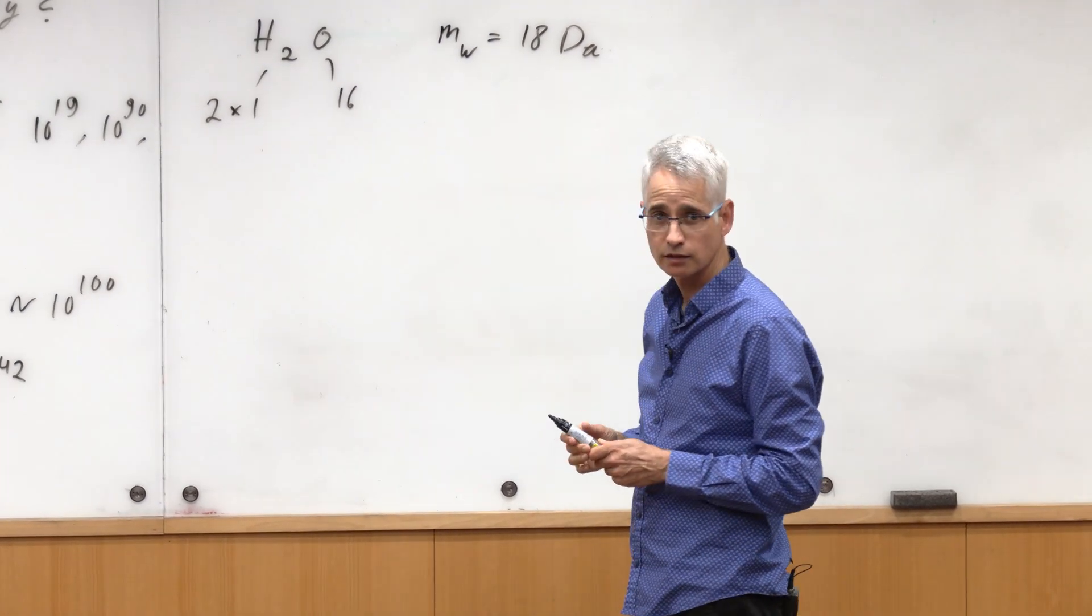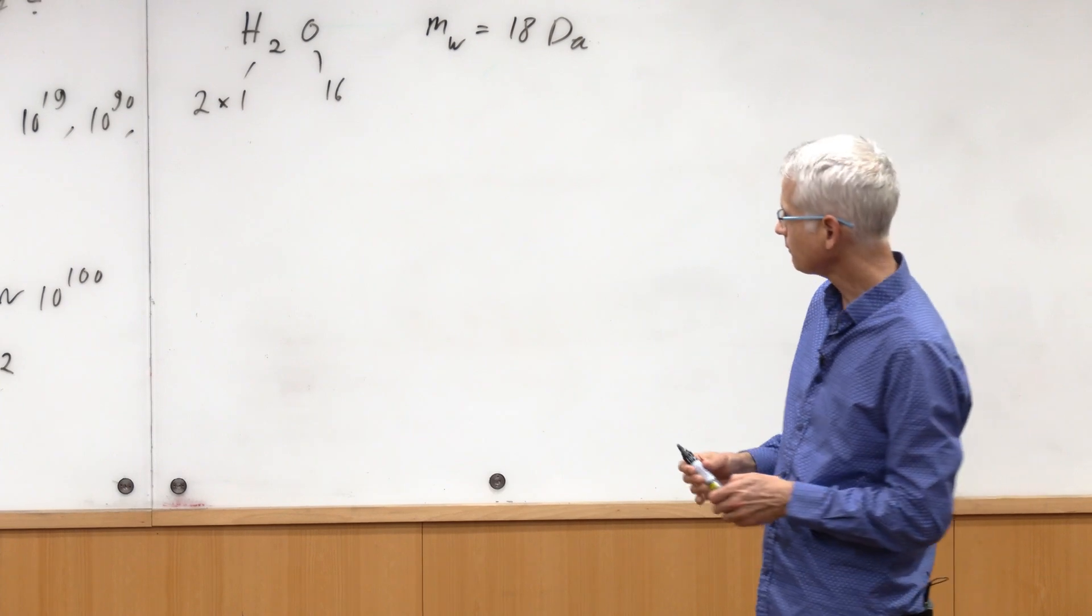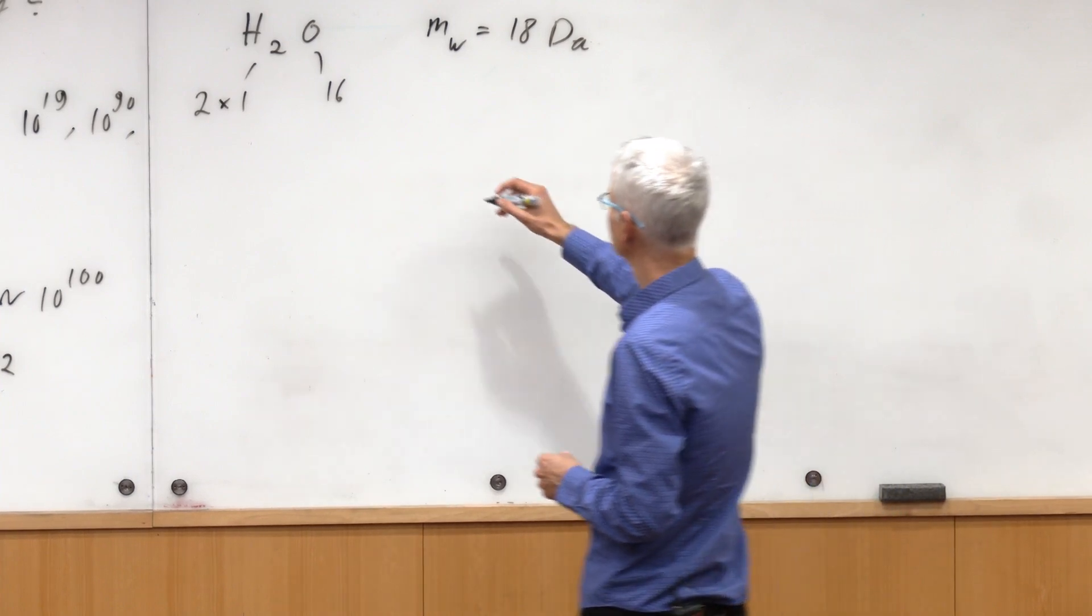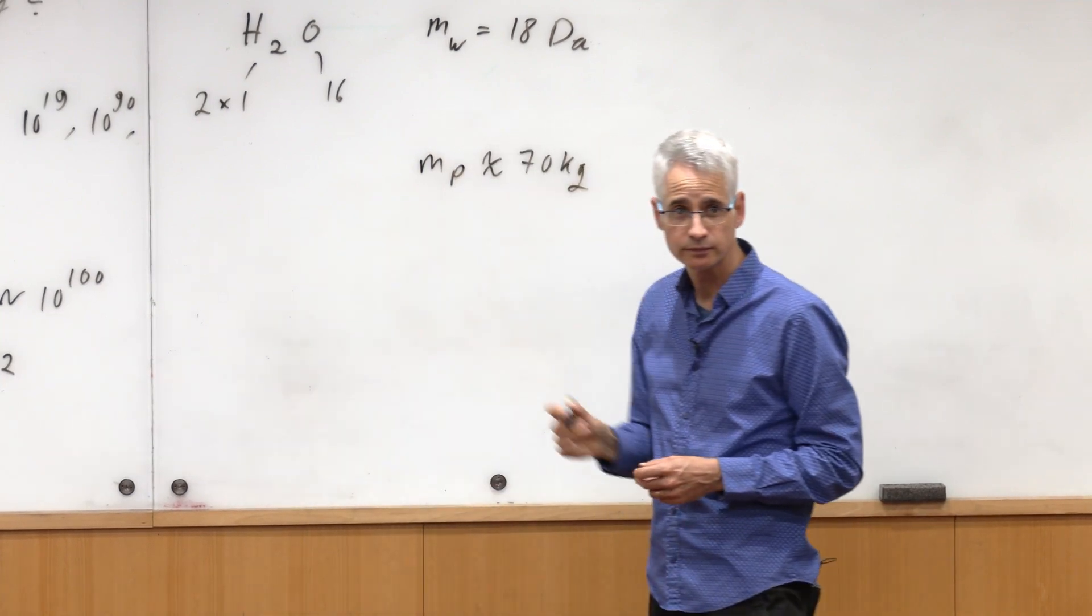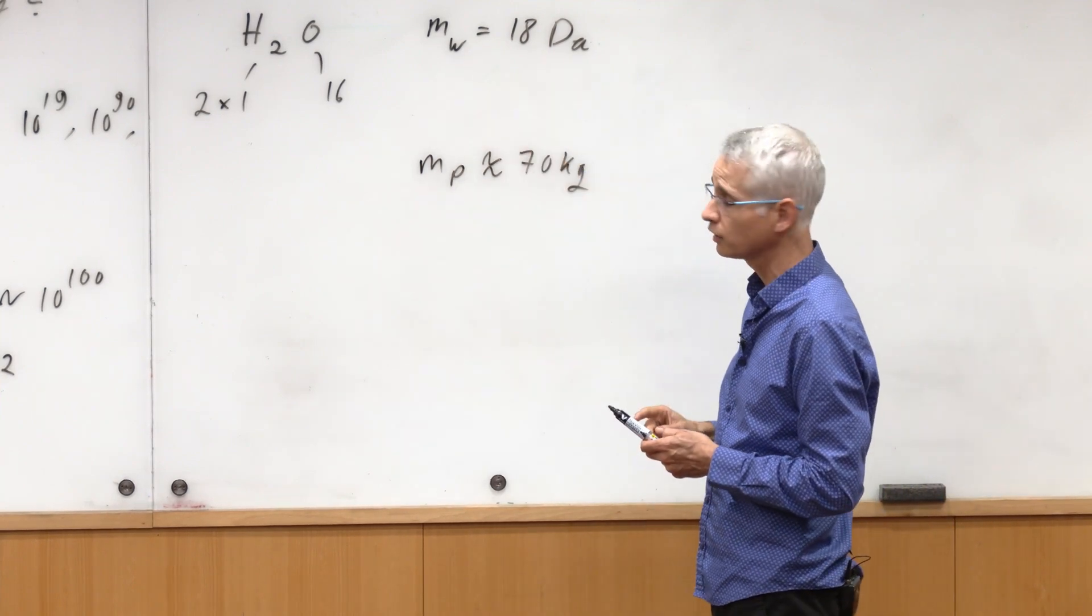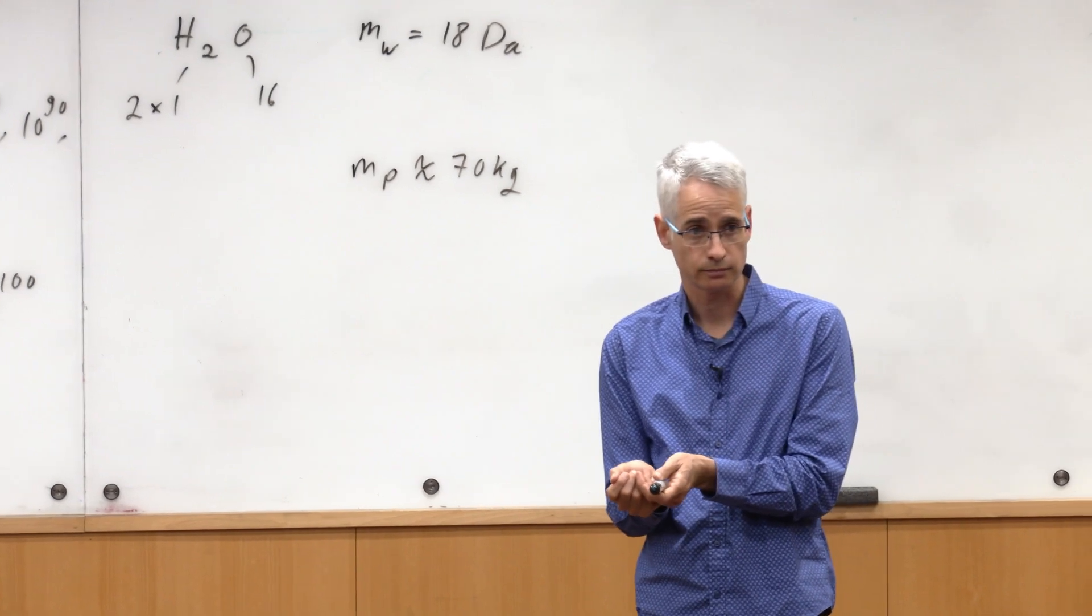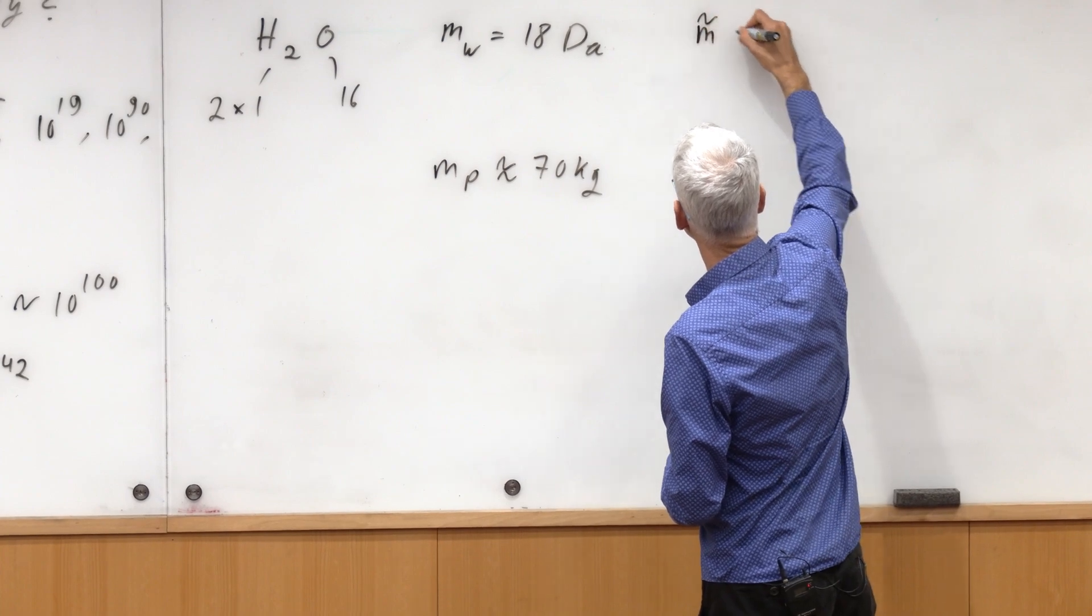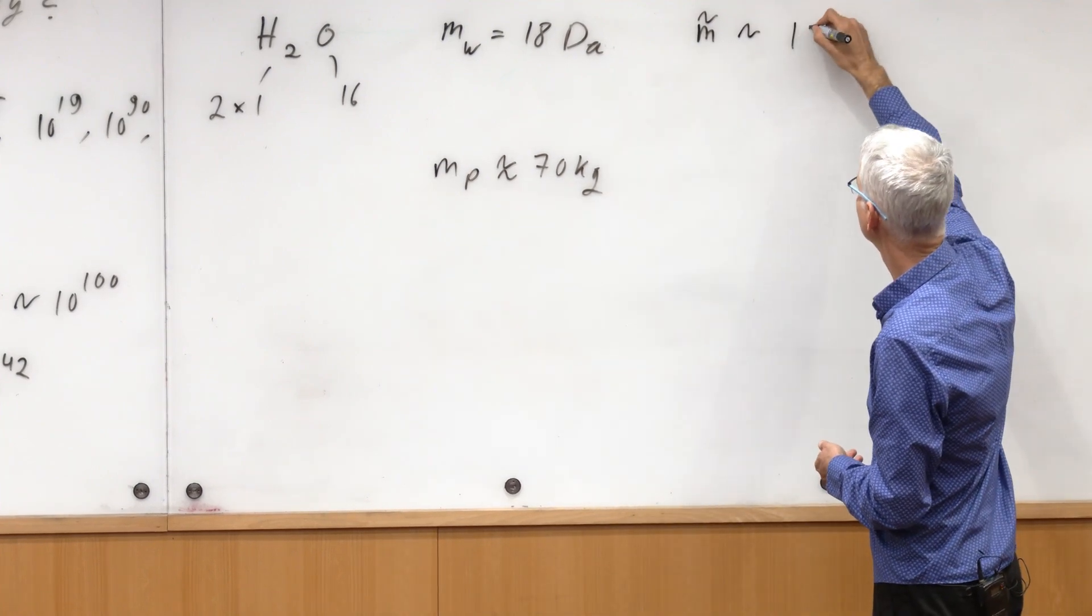Now I need to look from the other direction at the weight of a person, and this wouldn't be in Daltons. How much is the weight of a person? I know, 70 kilos, right? So now I want to do the following: this is the weight of the overall water. I'm interested in the weight, I want to go to the number of atoms. So I want to know the mass of an atom, the average mass of an atom in terms of Daltons. We could divide it by three, I would say it's about 10 Daltons.